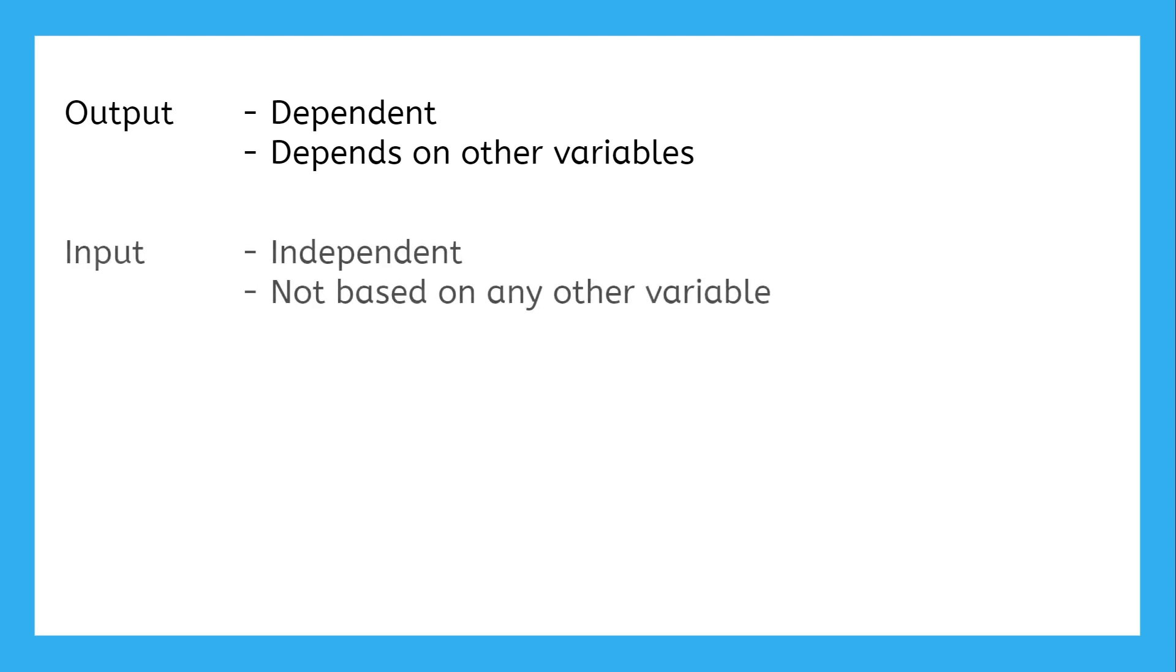Before we can put functions into context, we need to understand how inputs and outputs work in real-life scenarios. The output is the dependent variable because its value depends on what happened to the other variable. The input will be called the independent variable because it doesn't depend on any other variables.